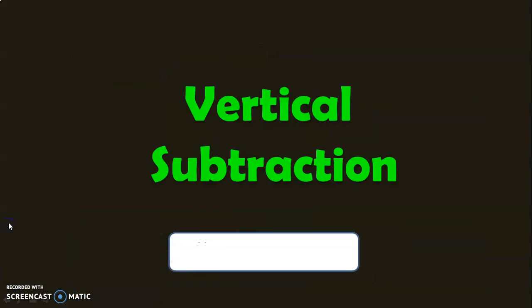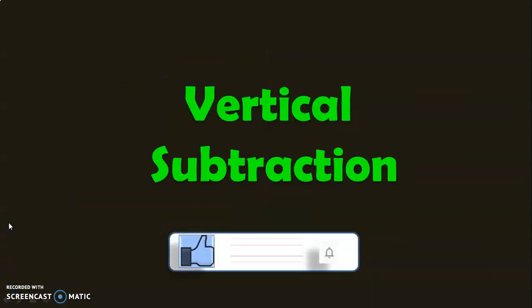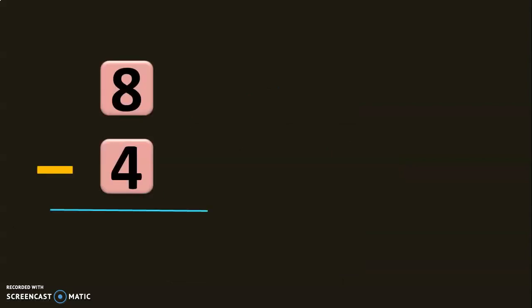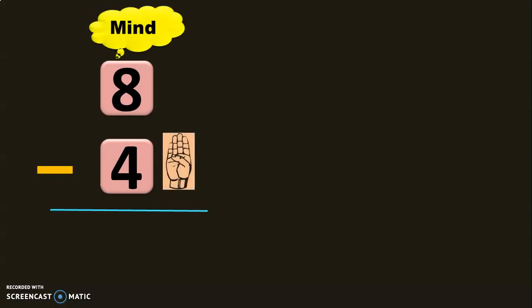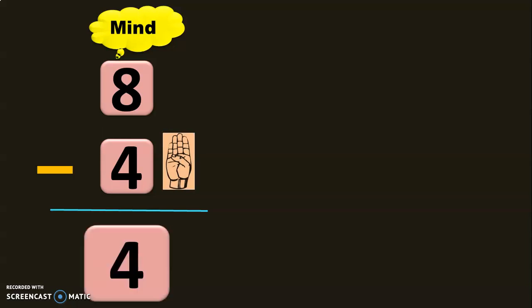Hope it is clear so far. Next, let us do vertical subtraction. 8 minus 4: 8 in the mind, 4 in the fingers. Before 8: 7, 6, 5, 4. So the answer is 4.